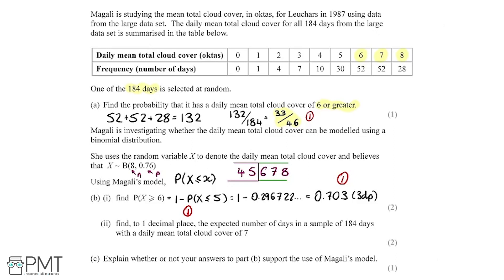The second part of B asks us to find, to one decimal place, the expected number of days in a sample of 184 days with a daily mean total cloud cover of 7. Using the same model, we work out the probability that X equals 7, then multiply by 184 to get the expected number over 184 days.